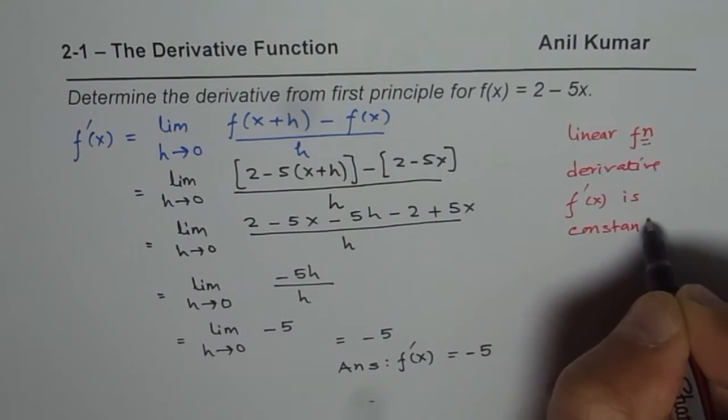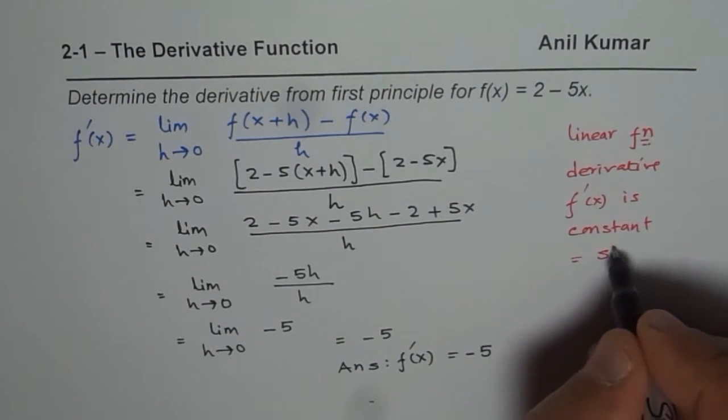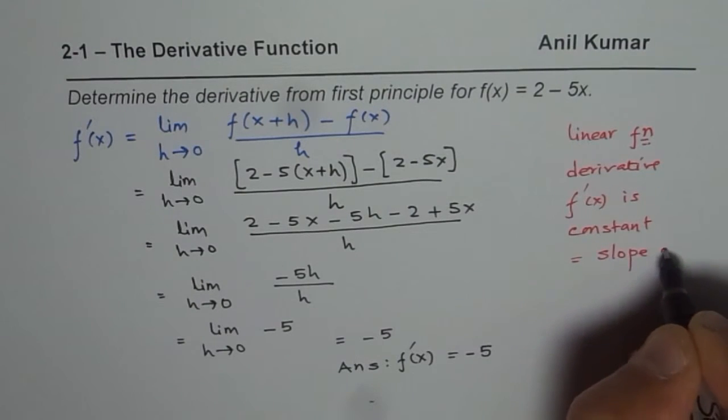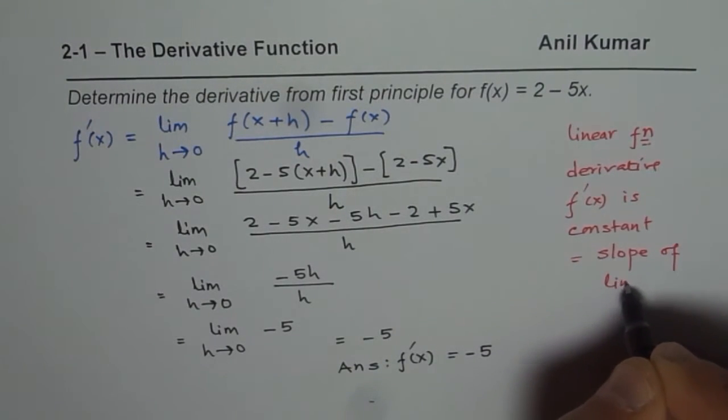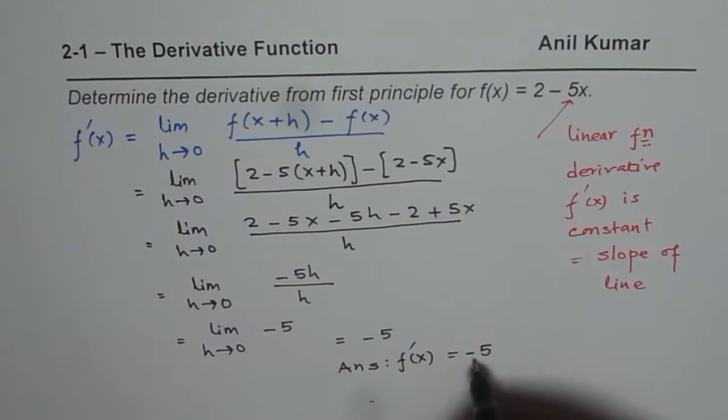and as you can see, it is equal to slope of the line. Slope of the line here is minus 5, and that is what our derivative is. So remember,